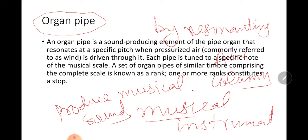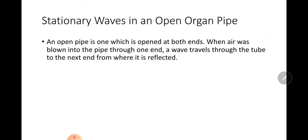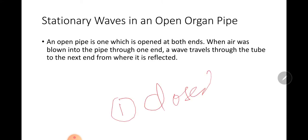There are two types of organ pipes: closed organ pipe and open organ pipe.